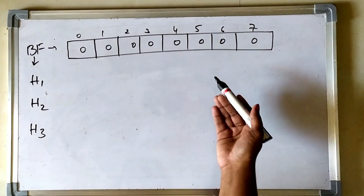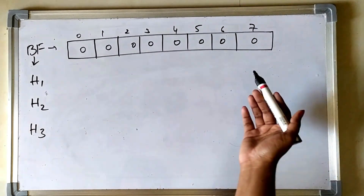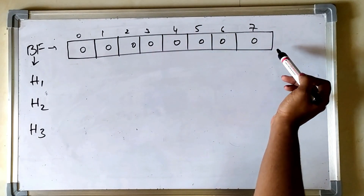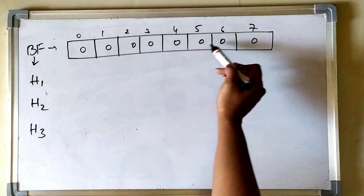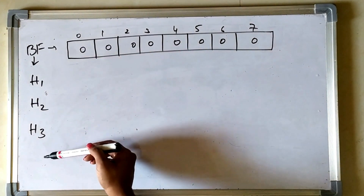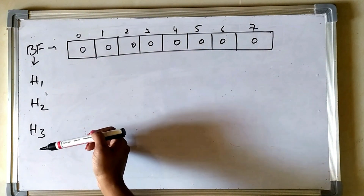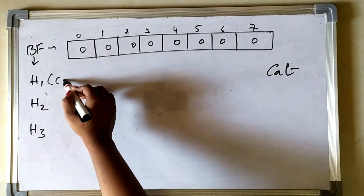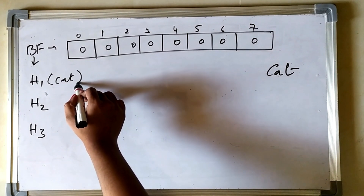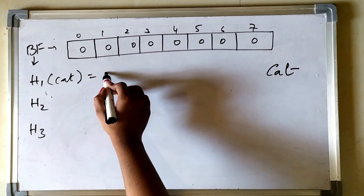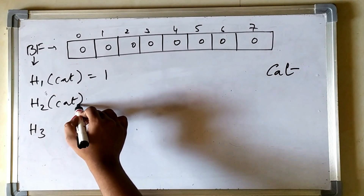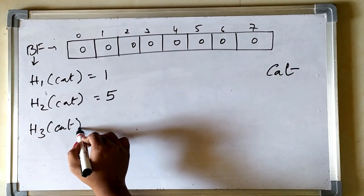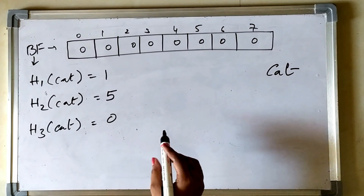A bloom filter takes care of reducing the space complexity by not storing the set elements at all. Instead, in a bloom filter we have a bit array of a fixed length, pre-populated with zeros. We also have n hash functions — say here we took three hash functions. If we have to store an element, say 'cat', we first calculate the hash of 'cat' using the first hash function, say that is 1.